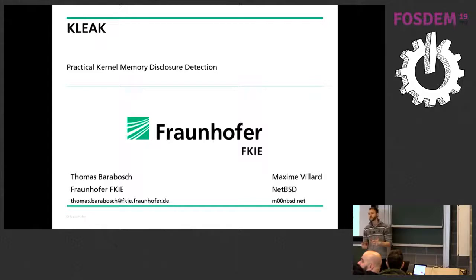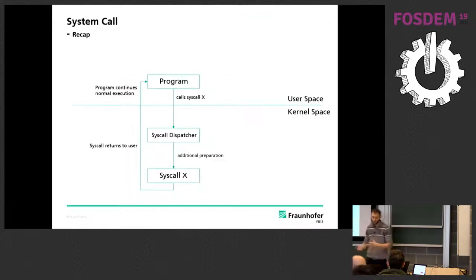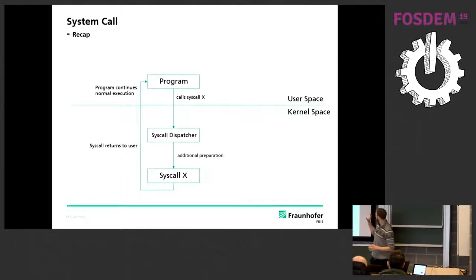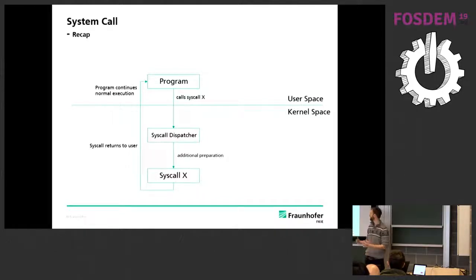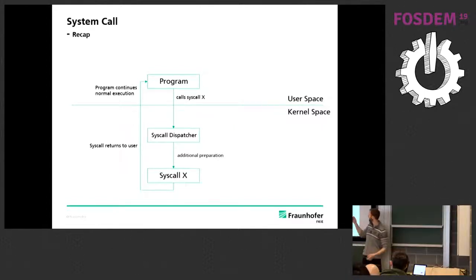Before going into the details — and I may warn you, this is a little bit more technical than the last talks — we need a quick recap on a few things. The first thing is: what is a syscall? There's user space and kernel space. We've got potentially untrusted programs that are isolated, and there's kernel space where the power lies. Programs are isolated, and to do anything meaningful, they have to ask the kernel. So they use syscalls — for example, syscall X, which could be send packets or write to file — and then you call into the kernel.